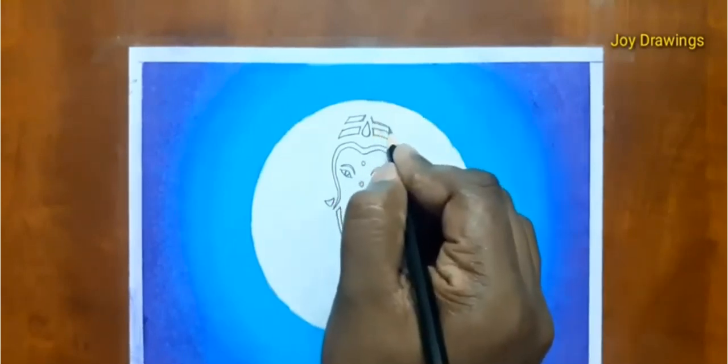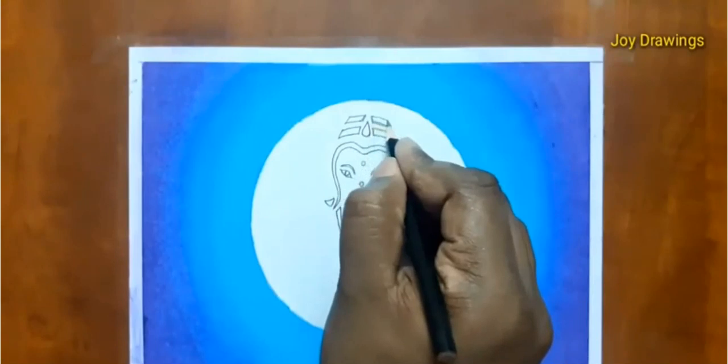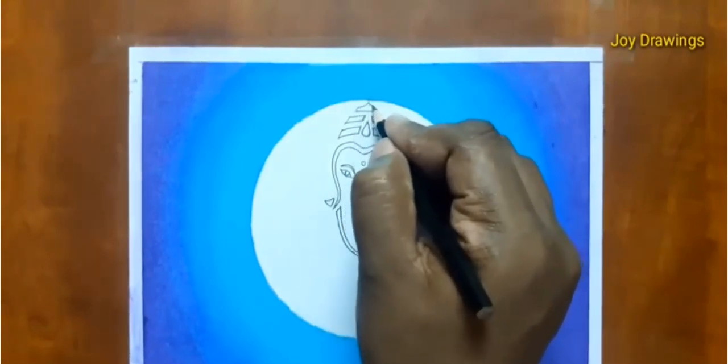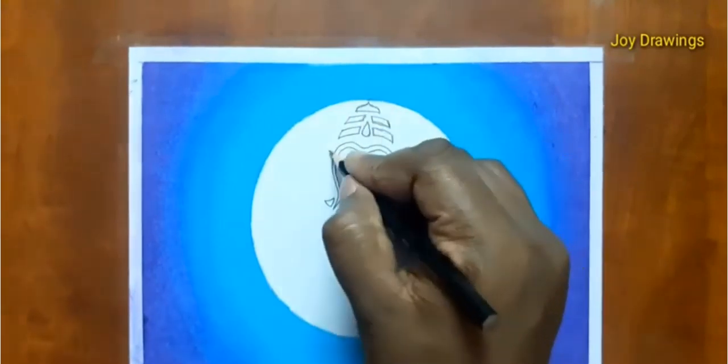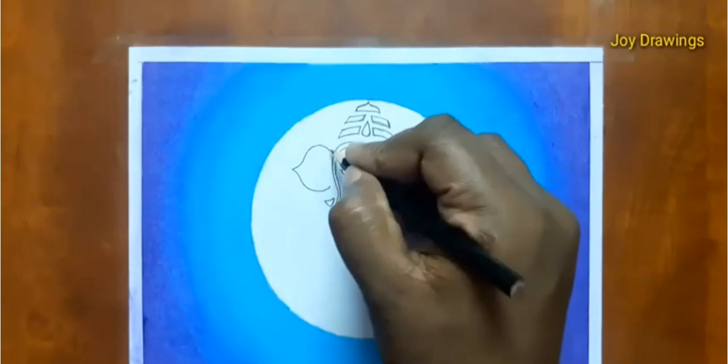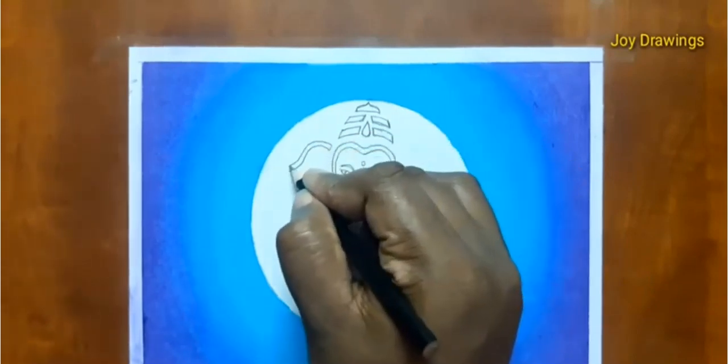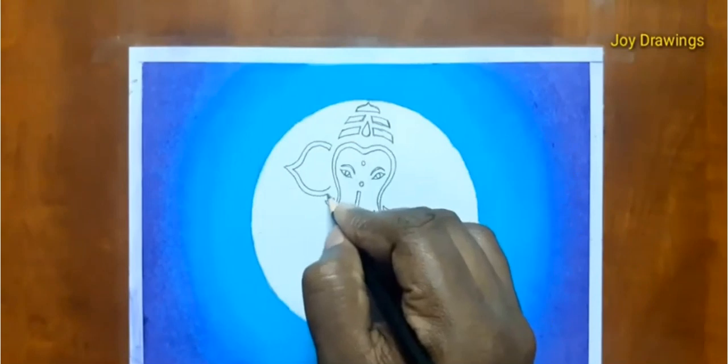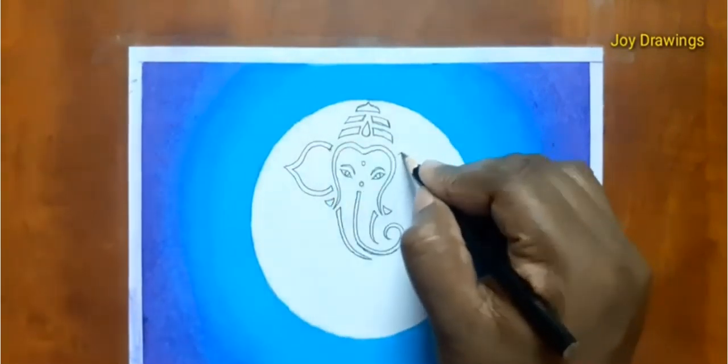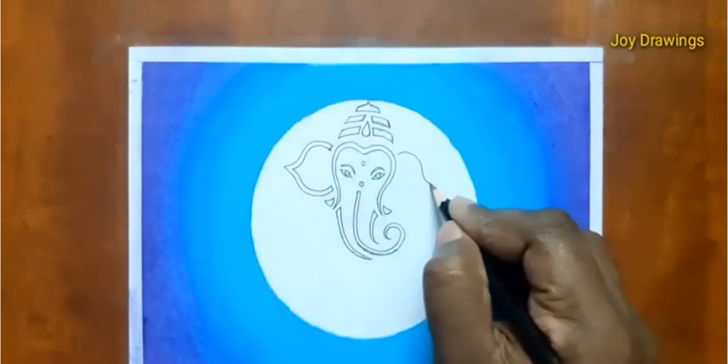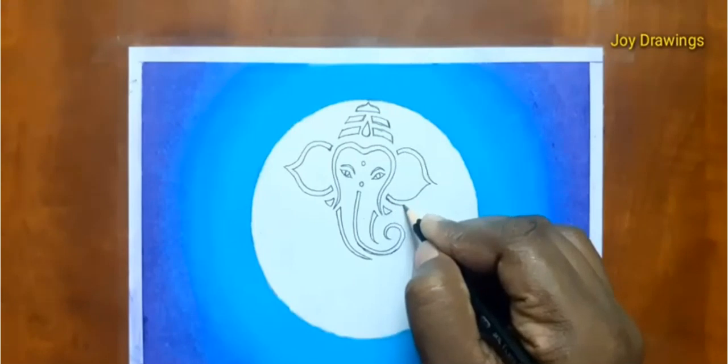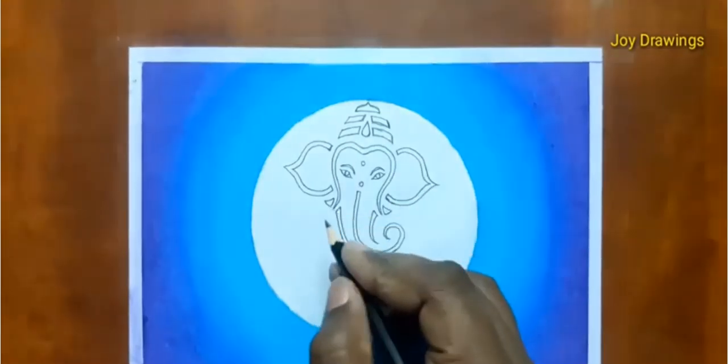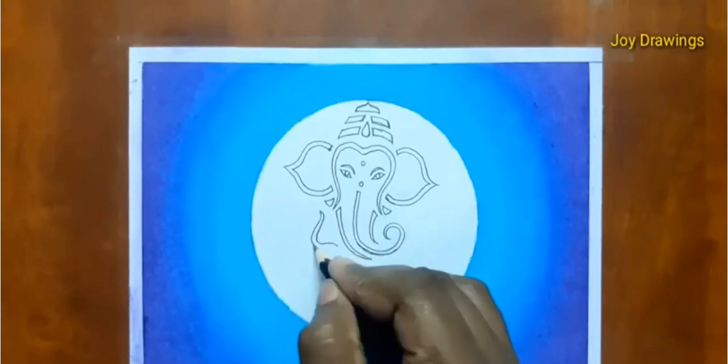It's so lovely, I feel very happy. Wow. Ganesha's ears, crown, tears, everything—even his ears are very much ready. Now we should draw his stomach, hands, and legs. Only these are little left.